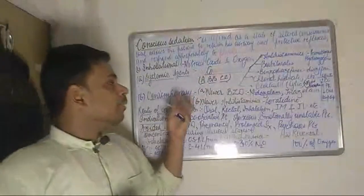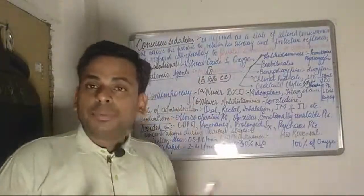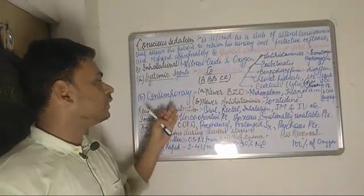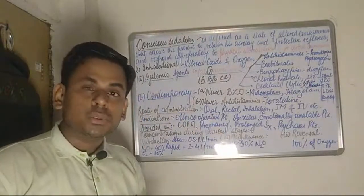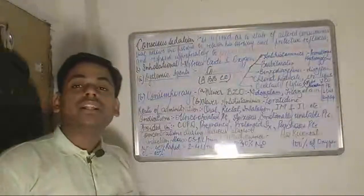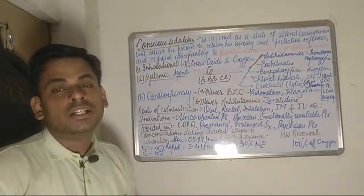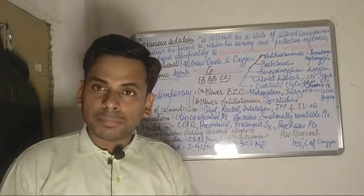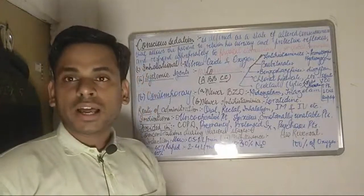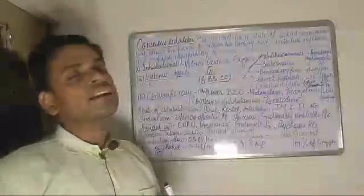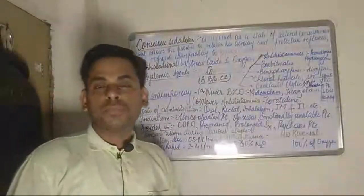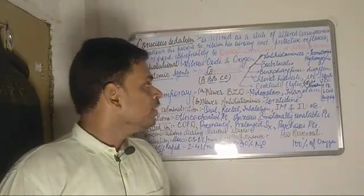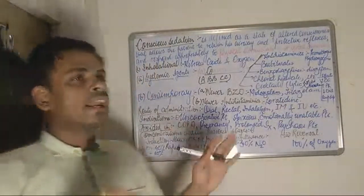Under the contemporary systemic drugs used for conscious sedation, they include newer benzodiazepines and newer antihistaminics. The newer benzodiazepines include midazolam and triazolam, and the most commonly used drug among the newer antihistaminics is loratadine.